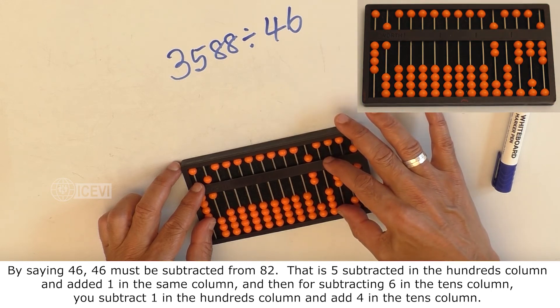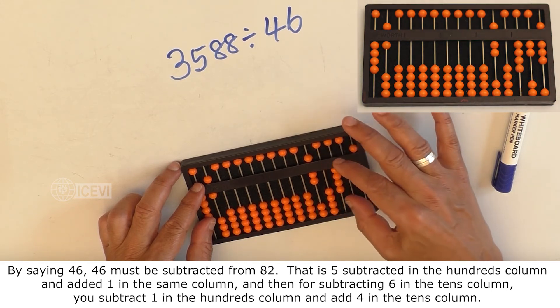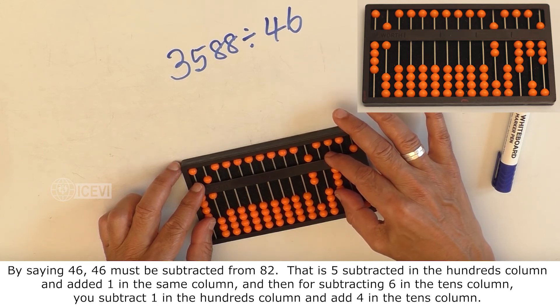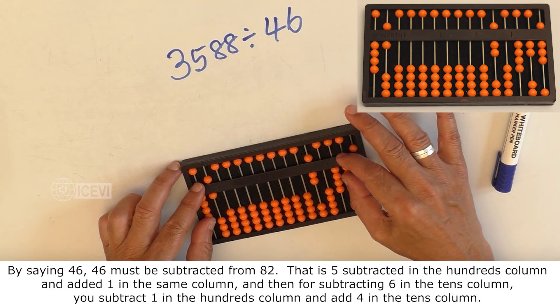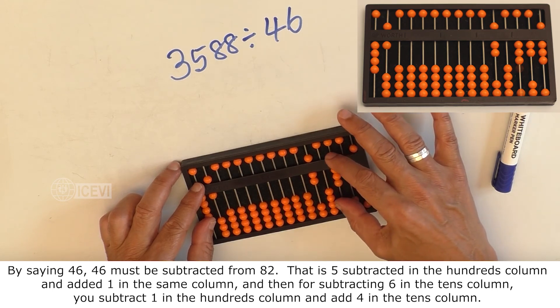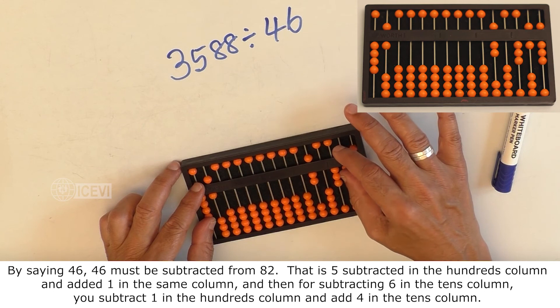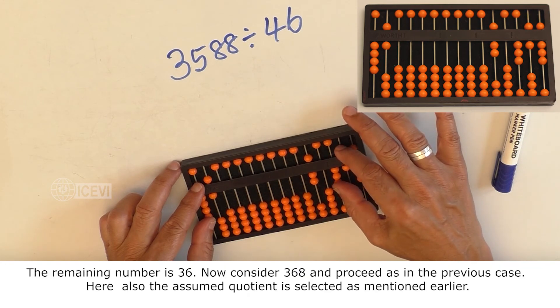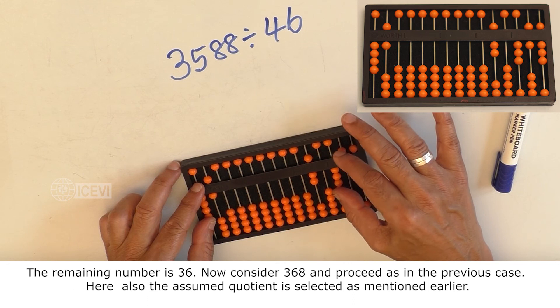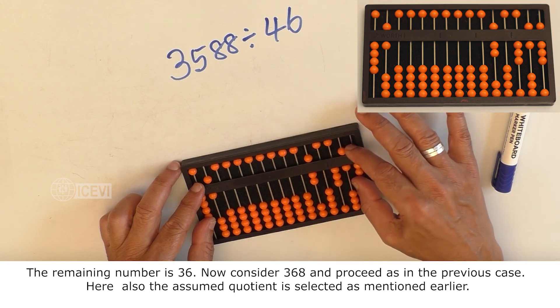That is, 5 subtracted in the hundreds column and added 1 in the same column, and then for subtracting 6 in the tens column, you subtract 1 in the hundreds column and add 4 in the tens column. Now, the remaining number is 368.